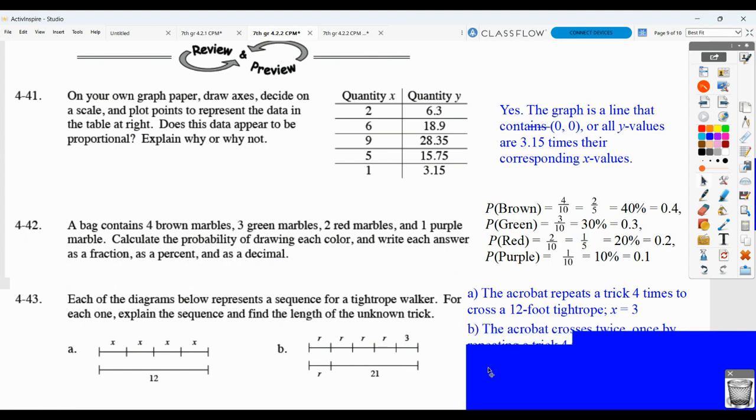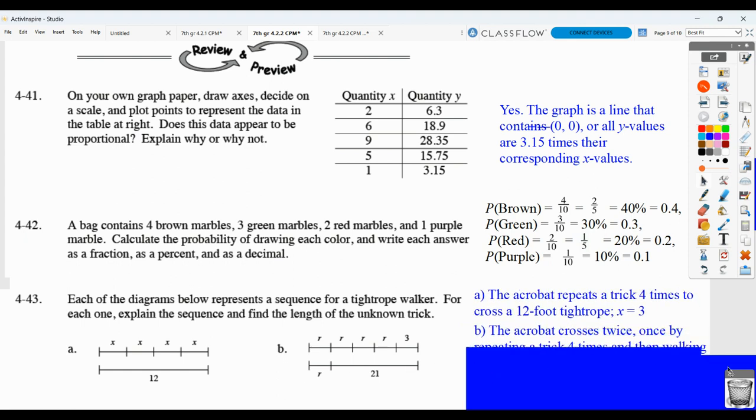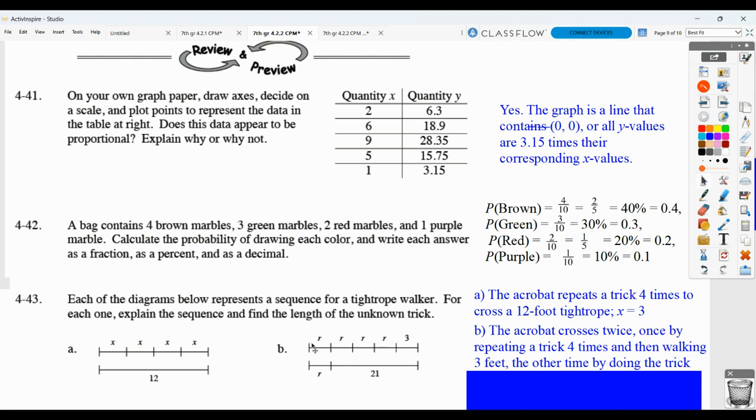And then, here, we see that he is the acrobat. Again, it could be a guy or gal, I guess. But, he is going to be going ahead and doing a trick four times and then walking another three feet. And then, on the way back, he is doing the trick one time and then walking 21 feet. So, what we know is this trick is repeated four times, going another three feet, and then the other direction, you could say 21 feet first and then doing the trick. The order doesn't matter.